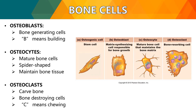For bone cells, we have the osteoblast, responsible for the formation, repair, and remodeling of bone — they are bone-generating cells, where 'B' stands for building. Next are osteocytes, which maintain bone matrix and form from osteoblasts after the bone matrix surrounds them — they are the mature bone cells, spider-shaped, maintaining bone tissue. Finally, osteoclasts contribute to bone repair and remodeling by removing existing bone through resorption — they carve the bone, the bone-destroying cells, where 'C' stands for chewing.